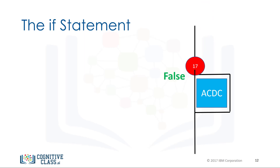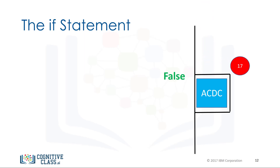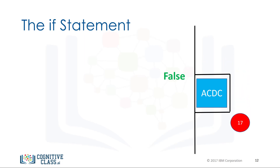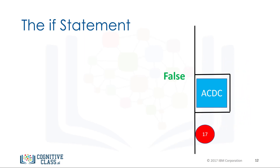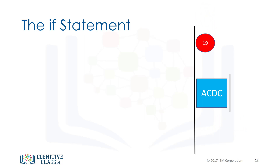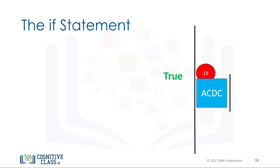An individual proceeds to the concert. Their age is 17. Therefore, they are not granted access to the concert and they must move on. If the individual is 19, the condition is true — they can enter the concert, then move on.